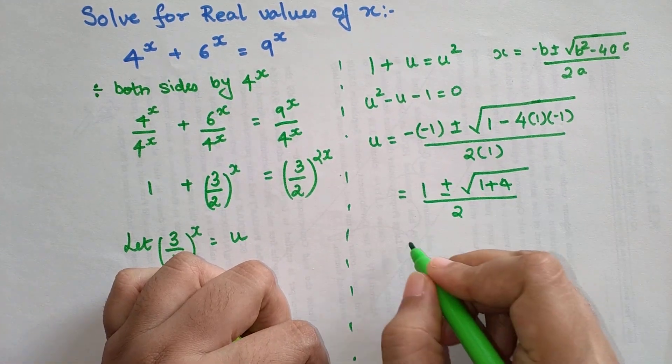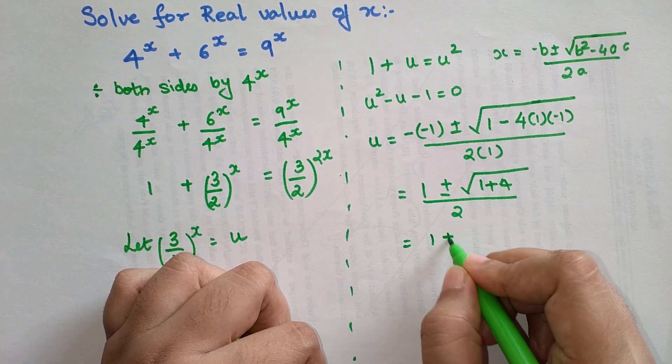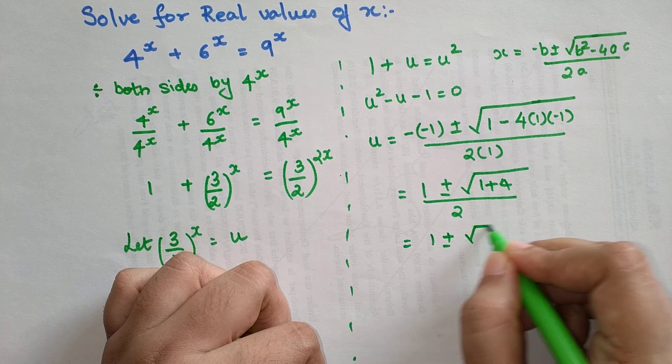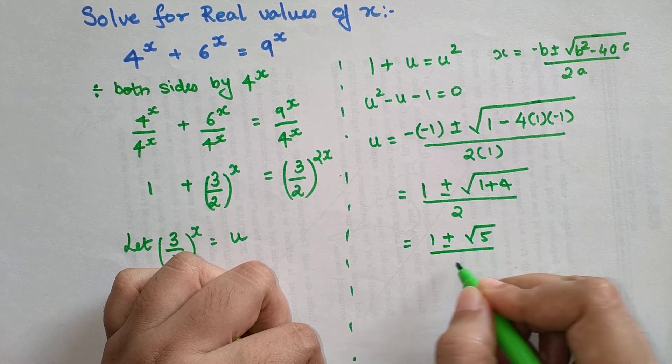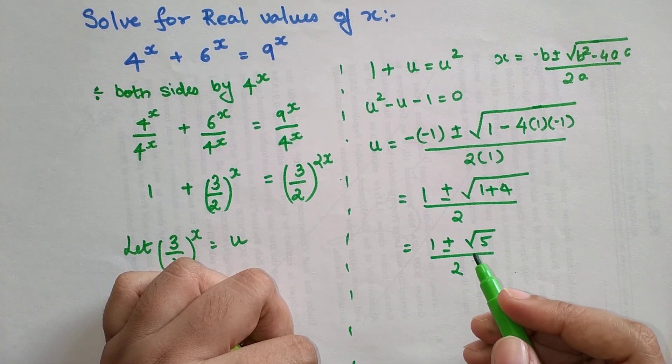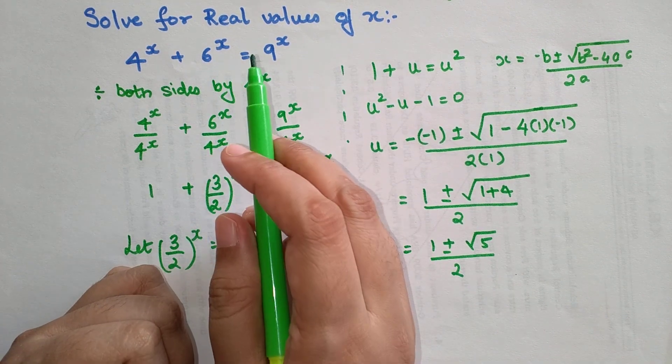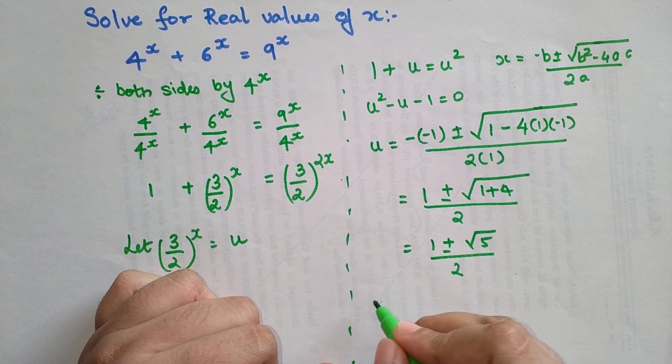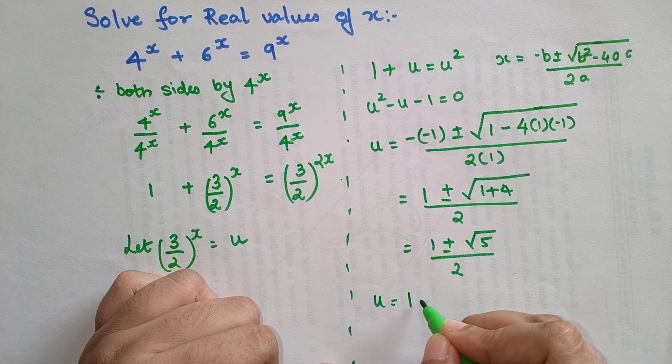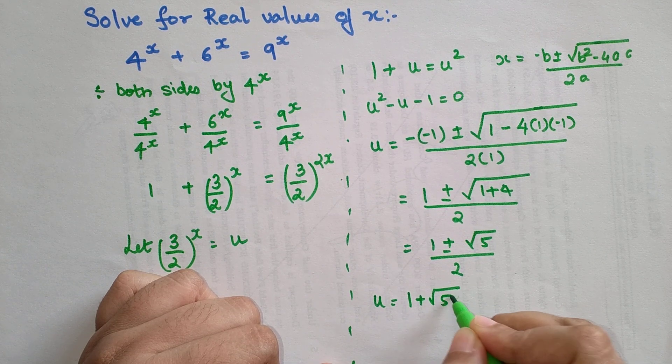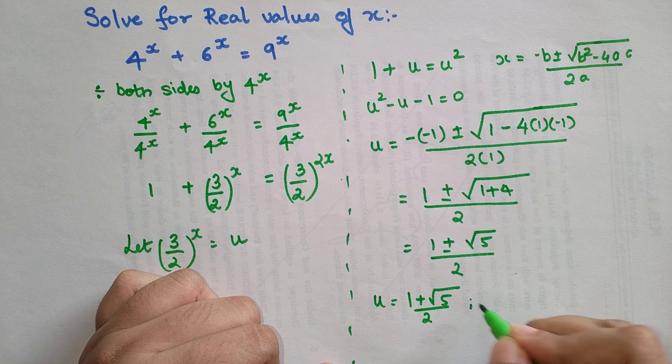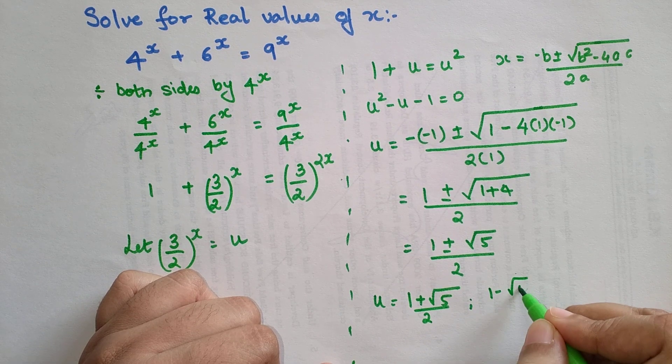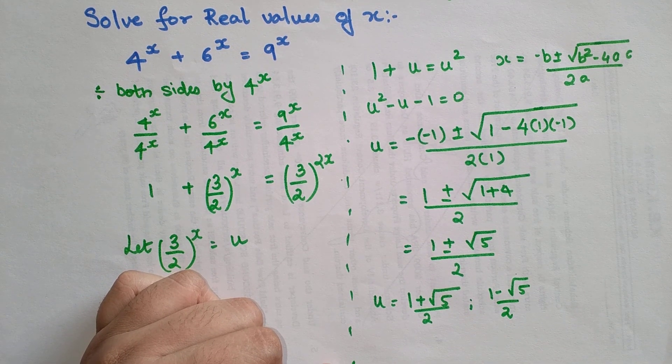Moving on, I can write this as nothing but (1 ± √5)/2. Now the thing is, in the question they have said solve for real values of x. So here I can say that u equals either (1 + √5)/2 or (1 - √5)/2.